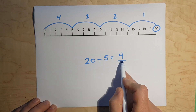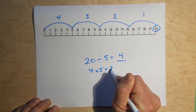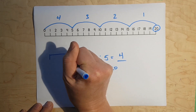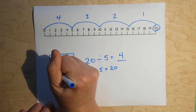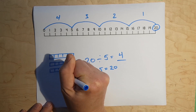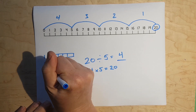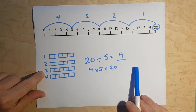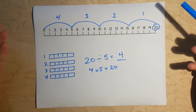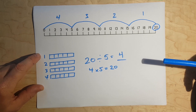20 divided by 5 equals 4. 4 times 5 equals 20. It works both ways. Now, let's draw this again. If I've got 4 groups of 5 — 1, 2, 3, 4, 5 — that's group 1; 1, 2, 3, 4, 5 — that's group 2; that's 3; that's 4. Imagine you have 4 of you — 3 friends and yourself — and your mom makes 20 brownies. There are 4 of you and you get 5 each.